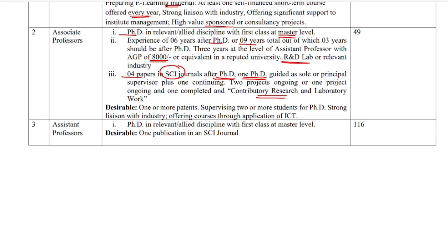Desirable for Associate Professor includes one or more patents. For Assistant Professor, the requirement is a PhD or first class at Master's level in the relevant field. If you have cleared NET or equivalent, you are eligible. The minimum publication requirement is one paper published in an SCI journal.